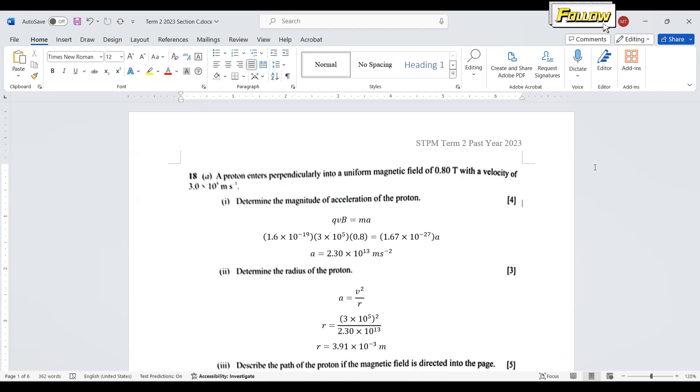Part (ii): determine the radius of the proton. I think it should be the radius of the circular path—we're not looking at the volume of the proton, but just the circular motion. Applying the formula...